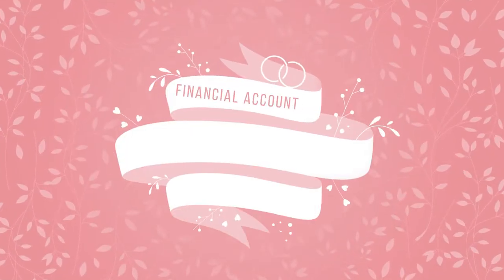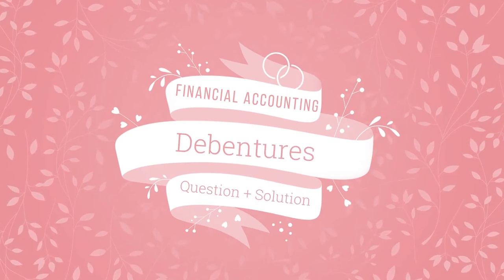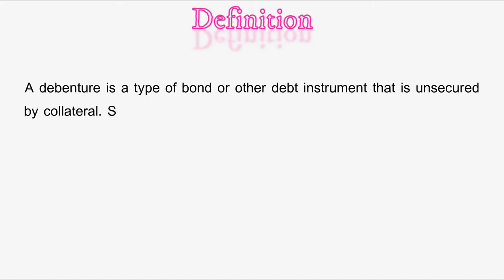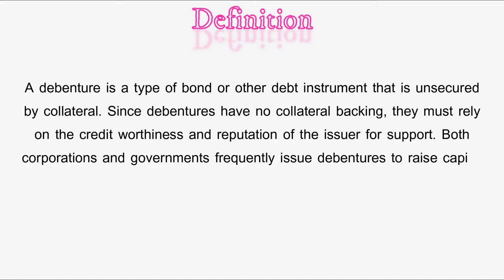Hi everyone, in today's video for financial accounting we will be going through debentures. We will also be doing a question and a solution. As always, let's start off with the definition. A debenture is a type of bond or other debt instrument that is unsecured by collateral. Since debentures have no collateral backing, they must rely on the creditworthiness and reputation of the issuer for support. Both corporations and governments frequently issue debentures.